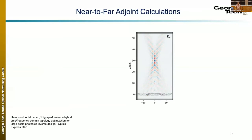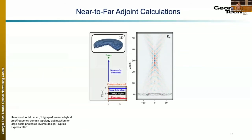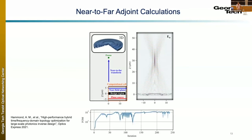Mo discussed another optimization: back-propagating through near-to-far adjoint calculations. Rather than simulating an entire metalens structure including the focus area and the space beyond, we can dramatically collapse the simulation domain down to just the region right above and below the structure and then project the fields using the Green's function in the near-to-far transformation.